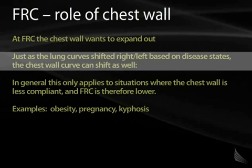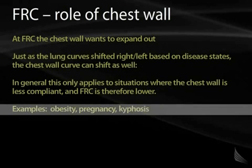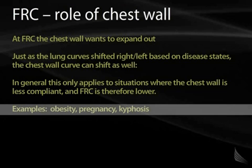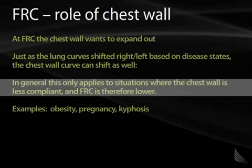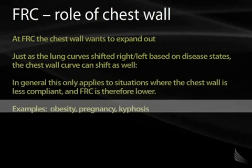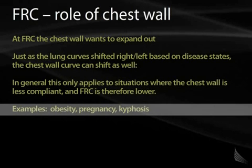For example, in a very obese patient with a lot of adipose tissue on the chest wall, the chest wall is going to want to expand out less. Similarly, in a pregnant patient where the fetus prevents the chest wall from expanding as much, the FRC will be lower — there are less distending forces from the chest wall. You can also see this in the case of kyphoscoliosis — somebody with severe spinal disease.